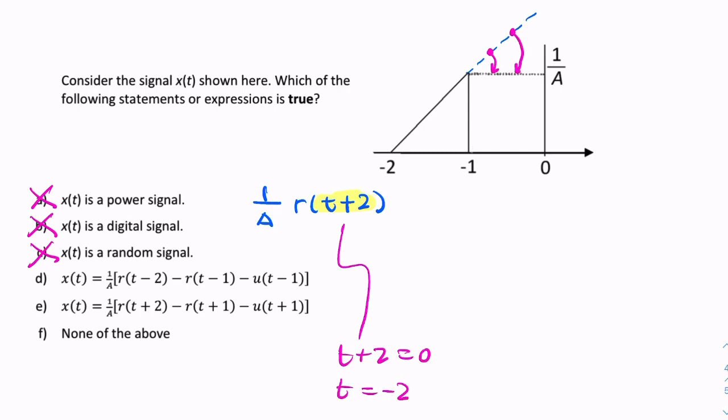So, something needs to be taken away from our ramp and that needs to happen at t equals minus one. So, what is it that I'm describing? What have I just drawn here? What does that look like? Well, that to me looks like another unit ramp. It looks like a ramp with the same scaling factor as the initial ramp. So, it looks like one over a r of t plus one. That's what it looks like. So, that's what I'll be subtracting. I'll be subtracting one over a r of t plus one.